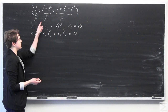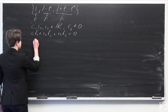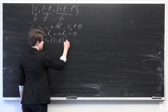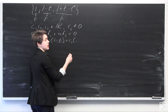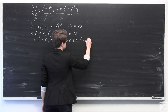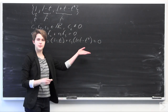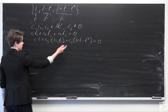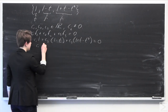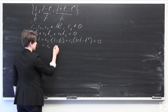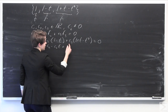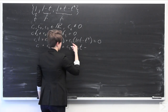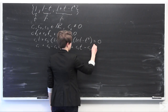Now I'm going to plug in these functions for f1, f2, and f3. So we have c1 times f1, which is 1, plus c2 times f2, which is 1 minus t, plus c3 times f3, which is 1 plus t minus t squared, and set that equal to 0. Distributing out the constants, we get: c1, plus c2, minus c2·t, plus c3, plus c3·t, minus c3·t squared.